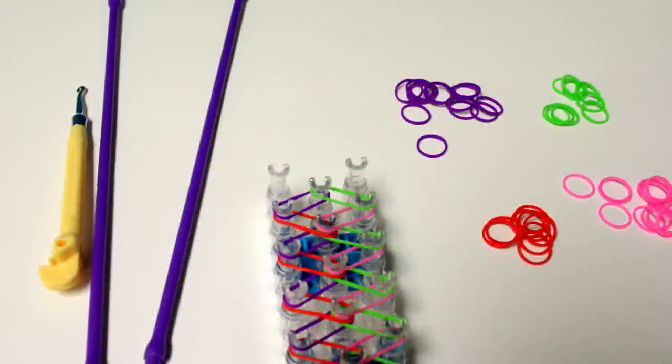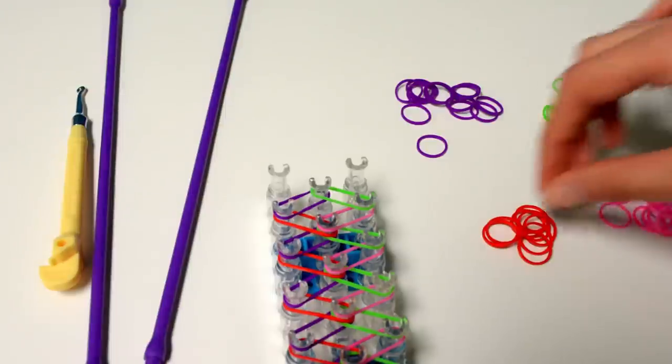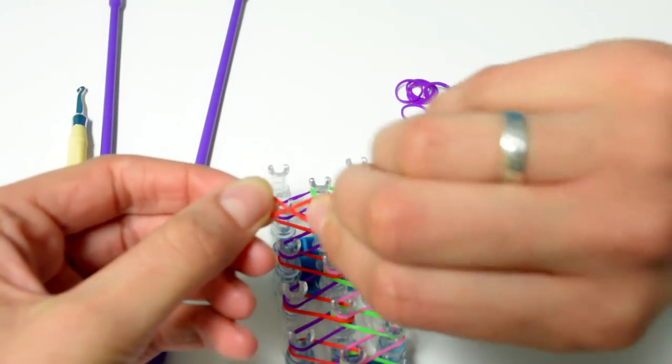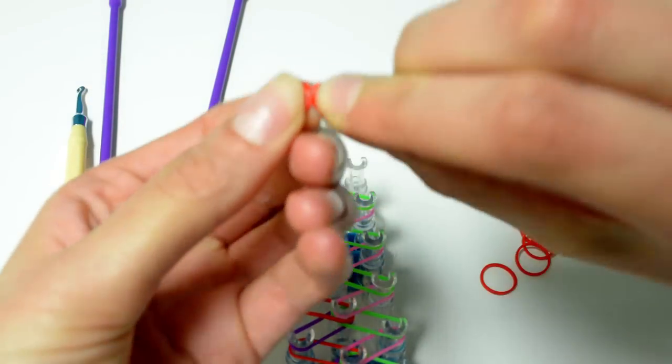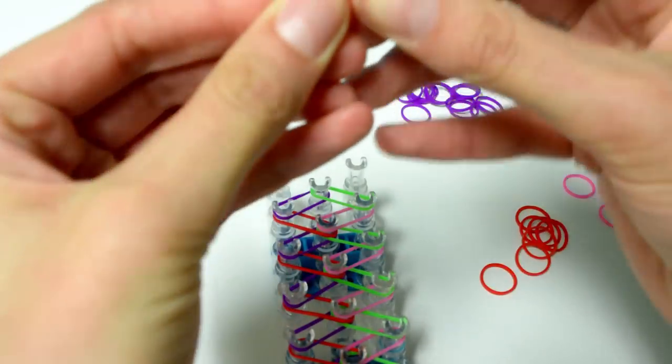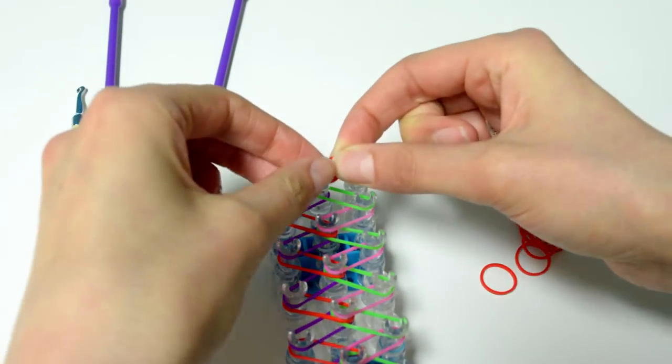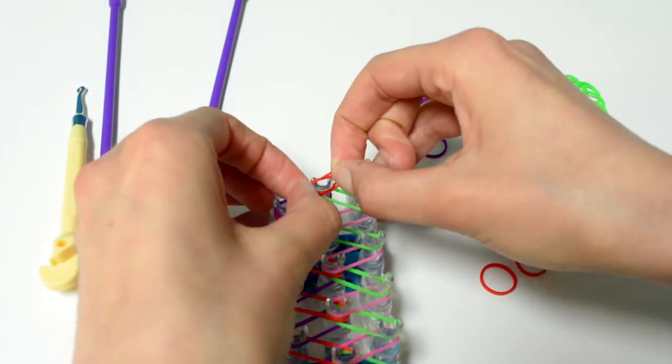Now, we need to make a cap band. To make the cap band, take a band and twist it into a figure eight, so it's folded on top of itself, and place that on the last peg at the end of your loom.